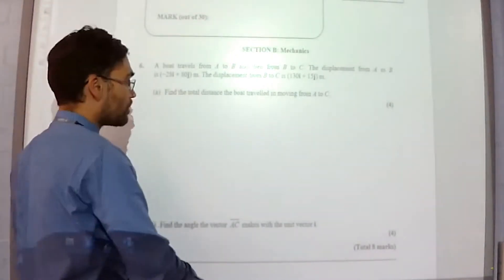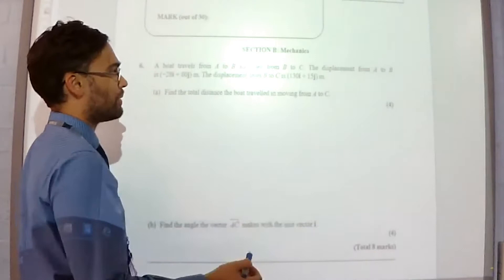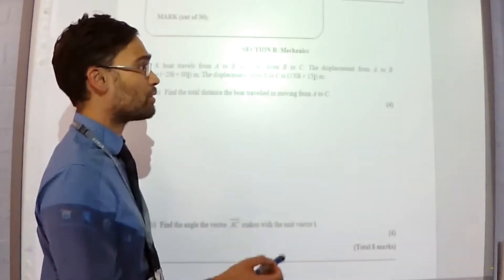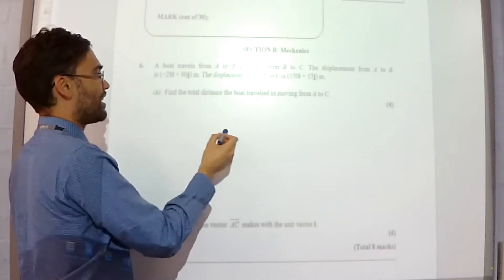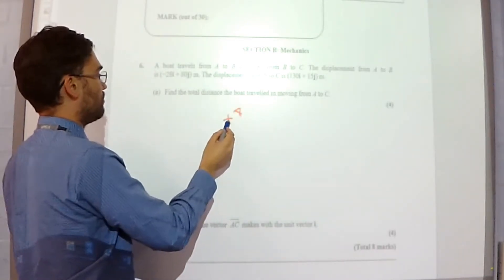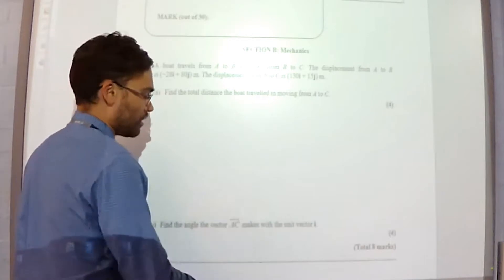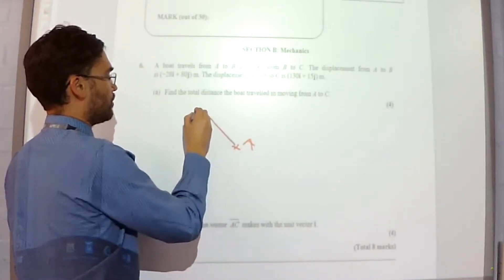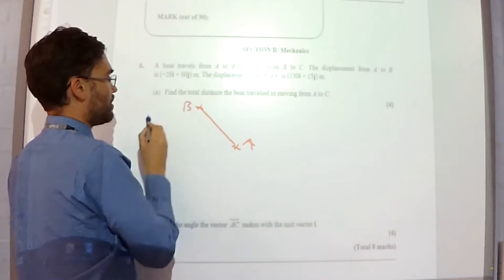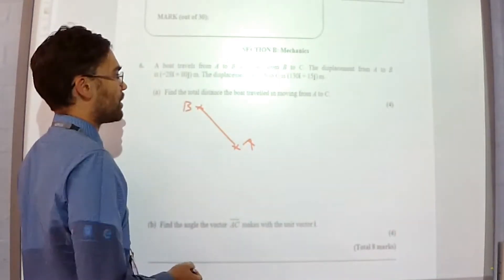So boat travels from A to B and then from B to C. Displacement from A to B is negative 28I plus 80J. So roughly speaking we're going to the left and up. So you've got A and it's going to go somewhere like this to B. It's just a sketch I've got in my head.